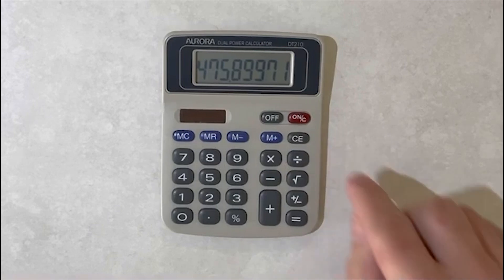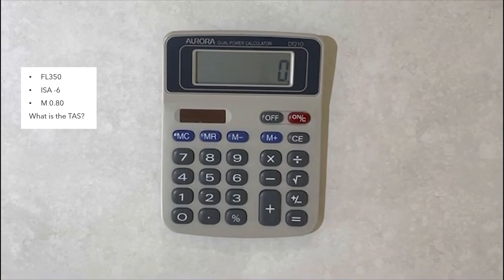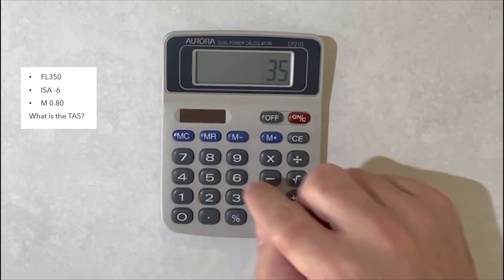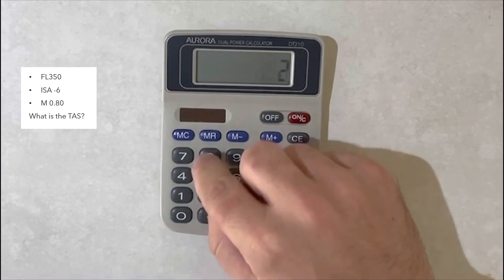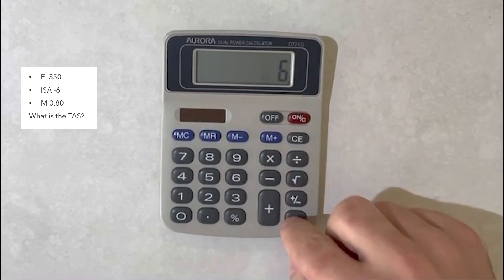Let's try another one. Let's say we are at flight level 350. The ISA deviation is minus 6 and we are looking for the TAS at Mach 0.8. We will go 1.98 multiplied by 35. We will subtract 288 and because it is ISA minus 6 we are going to be adding 6 to this number.